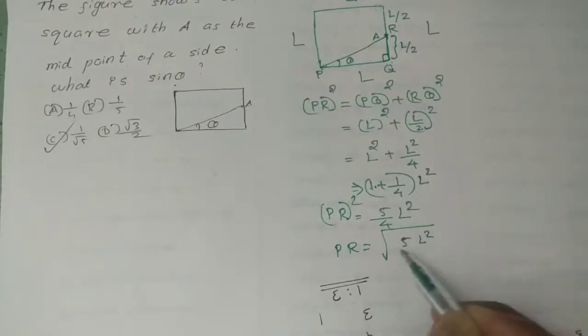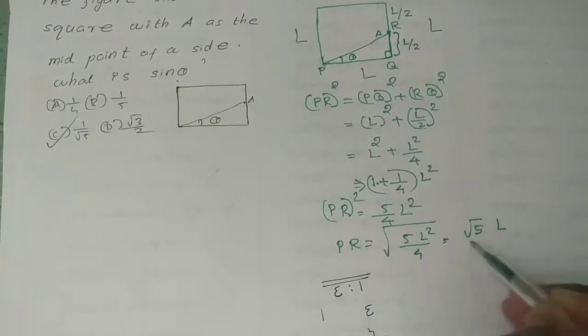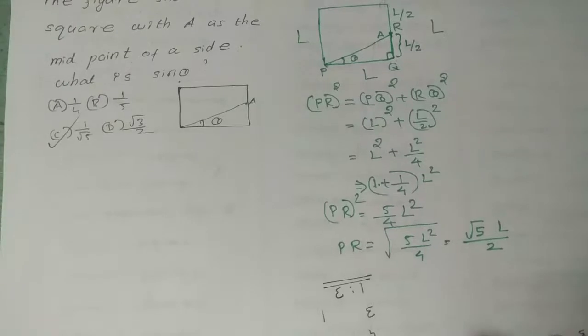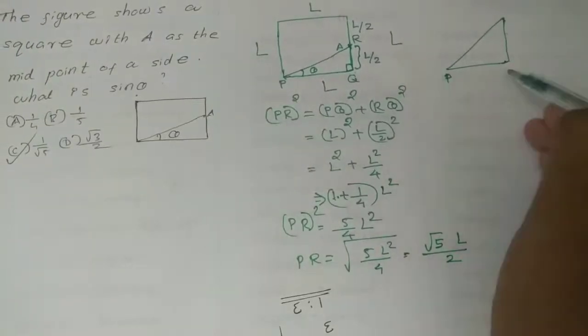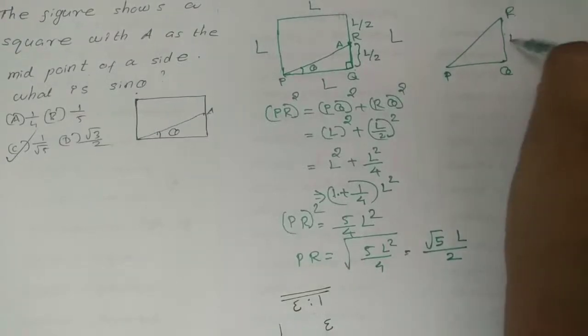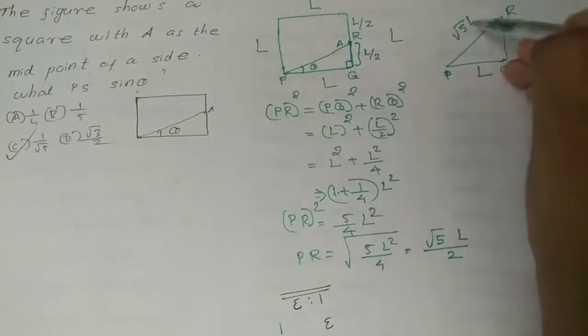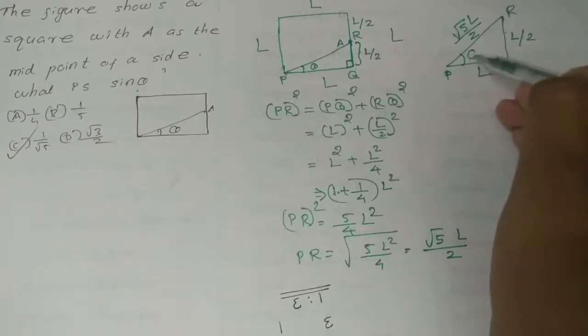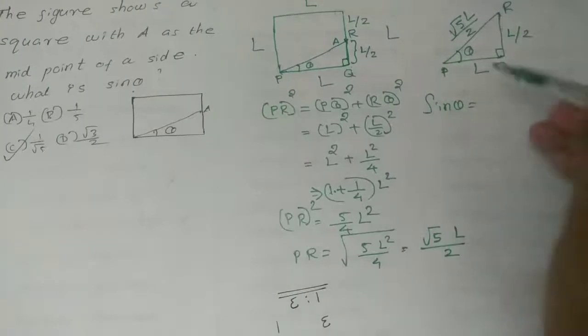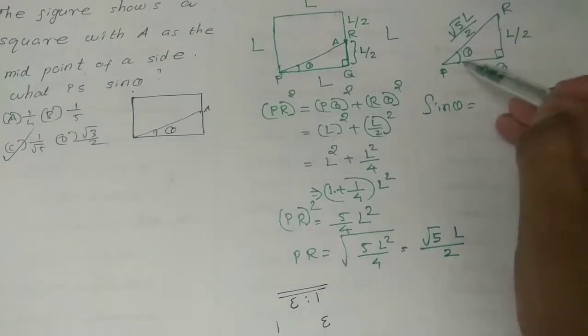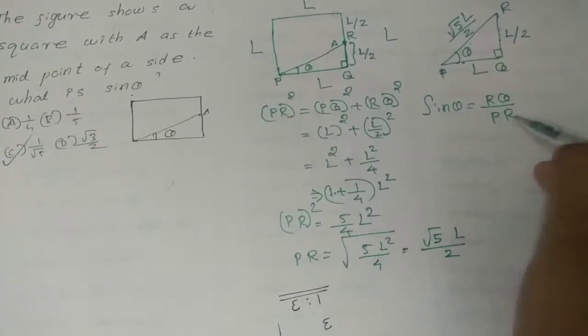So PQ equals root of 5L square divided by 4, which is root 5L by 2. Now if we have to find sine theta, it's either L by 2 or root 5L divided by 2. Sin theta equals opposite side divided by hypotenuse.